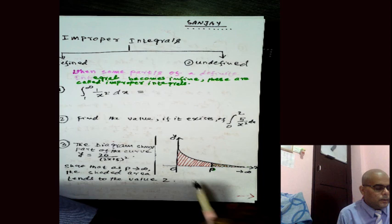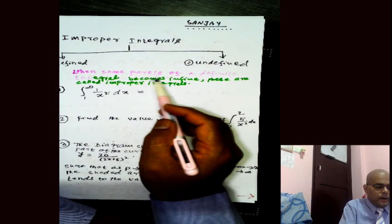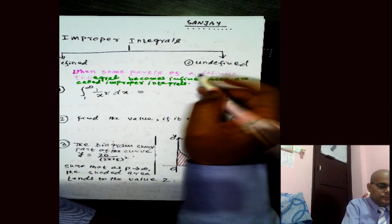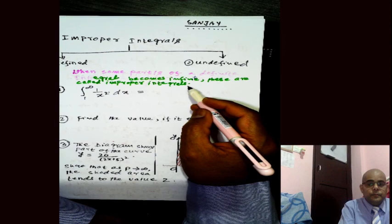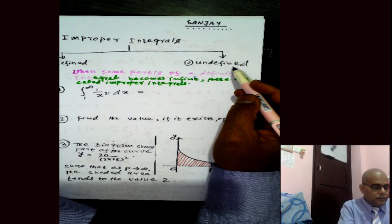We will now discuss improper integrals. When some part or parts of a definite integral becomes infinite, these are called improper integrals. In the improper integrals section, you will see that some integration parts are defined and some are undefined. Let's see which are defined and which are undefined.